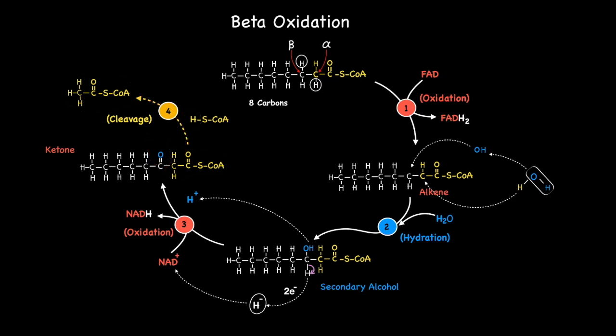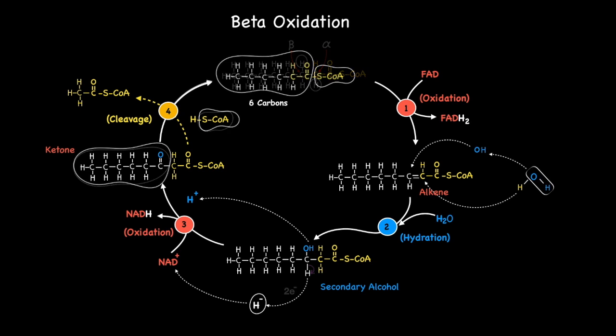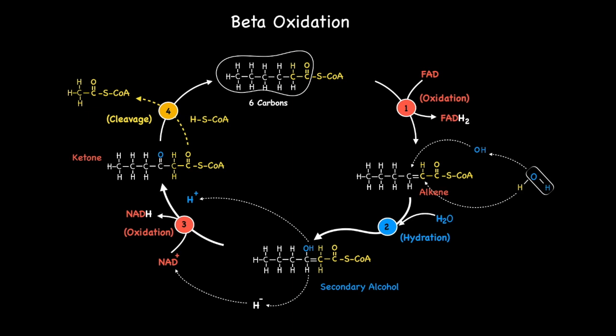The removal of this 2 carbon acetyl CoA segment during the fourth step of beta oxidation reduces the length of the carbon chain from 8 carbons to 6. The 6 carbon fatty acid fragment then combines with the S-CoA fragment to form a 6 carbon fatty acyl CoA product. Now the cycle repeats again undergoing the same steps in the same sequence.